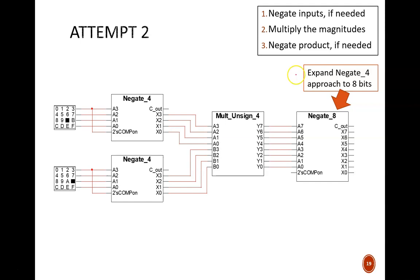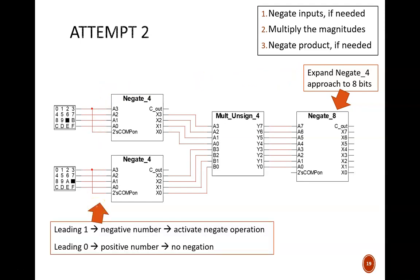Over on the left side, we see the solution for deciding how to negate the inputs. This most significant bit doubles as the control signal. A 1 here indicates a negative number and also activates the negate operation, so the output will be positive. A 0 here indicates a positive number and deactivates the negate operation, so the output is still positive.